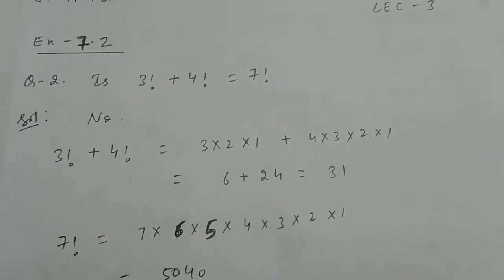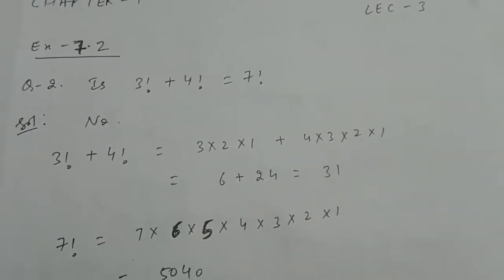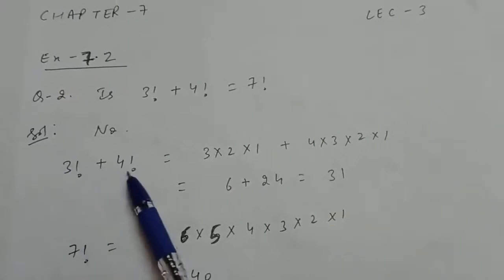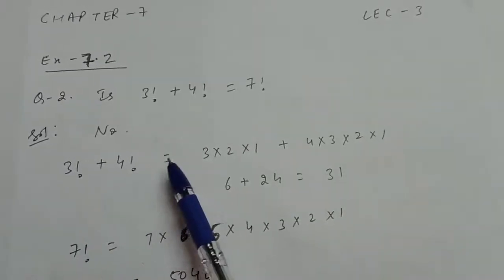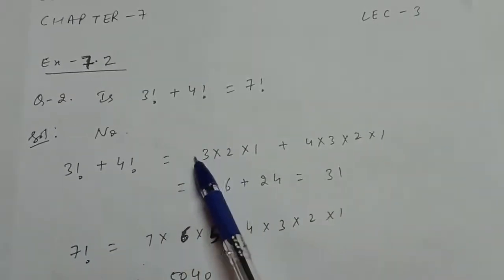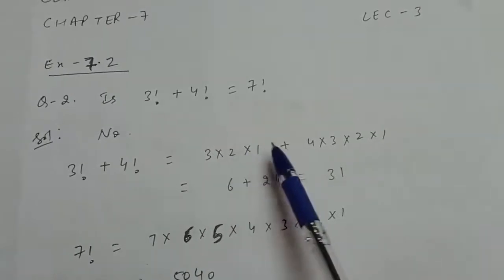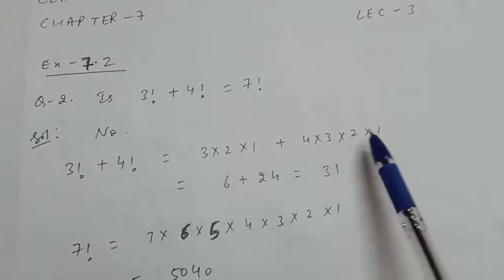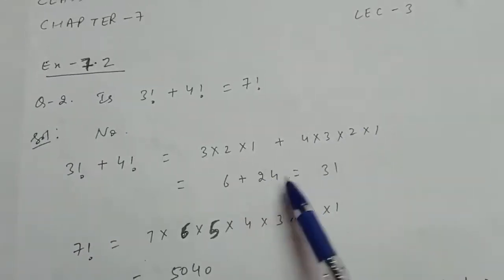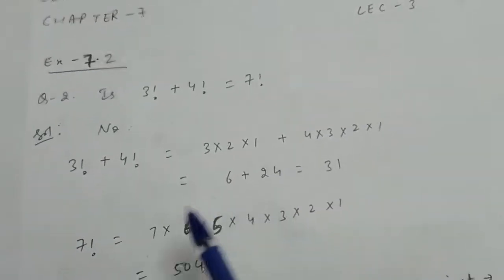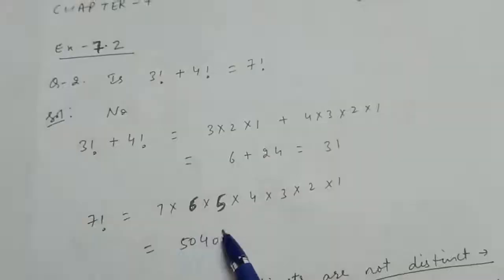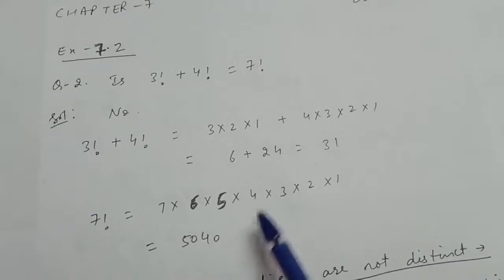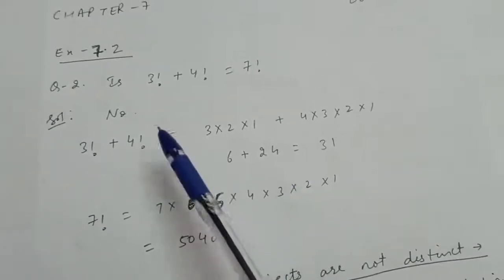Is 3! + 4! equal to 7!? The answer is no. We can check this: 3! + 4! = (3×2×1) + (4×3×2×1) = 6 + 24 = 31. And 7! = 5040. So these two are clearly not equal, therefore the answer is no.